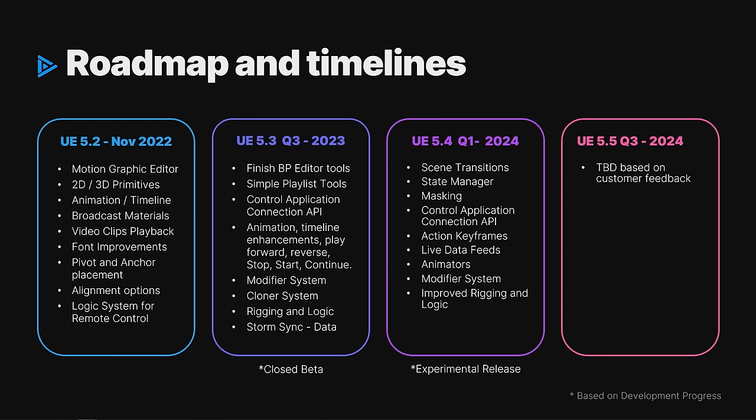To wrap things up — roadmap and timeline. We've been working on this since 5.2 a few years ago. 5.3 is out now, and the plan of record is to ship this in the 5.4 timeline, which will be out around GDC timeframe next year. We're working on scene transitions, state manager, masking, animators, modifier system — getting close to a near release. If you're interested in the beta, especially if you work for a big media company and are excited to test out these tools, come find us after this and we'll link you up. We'd love to hear your feedback. Thank you very much, everyone.